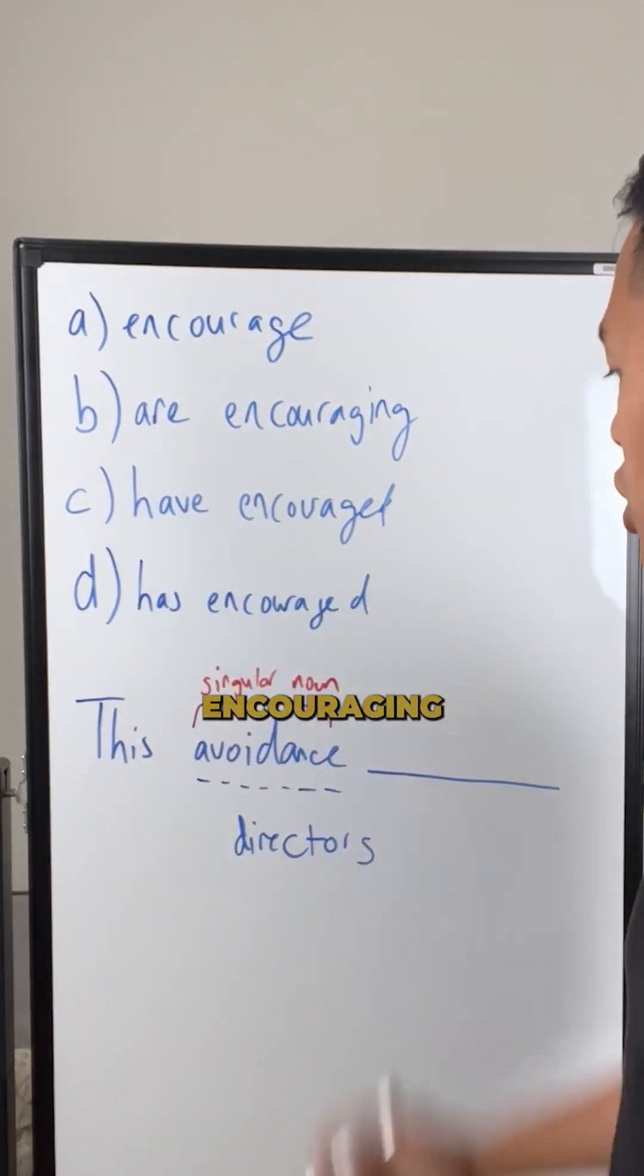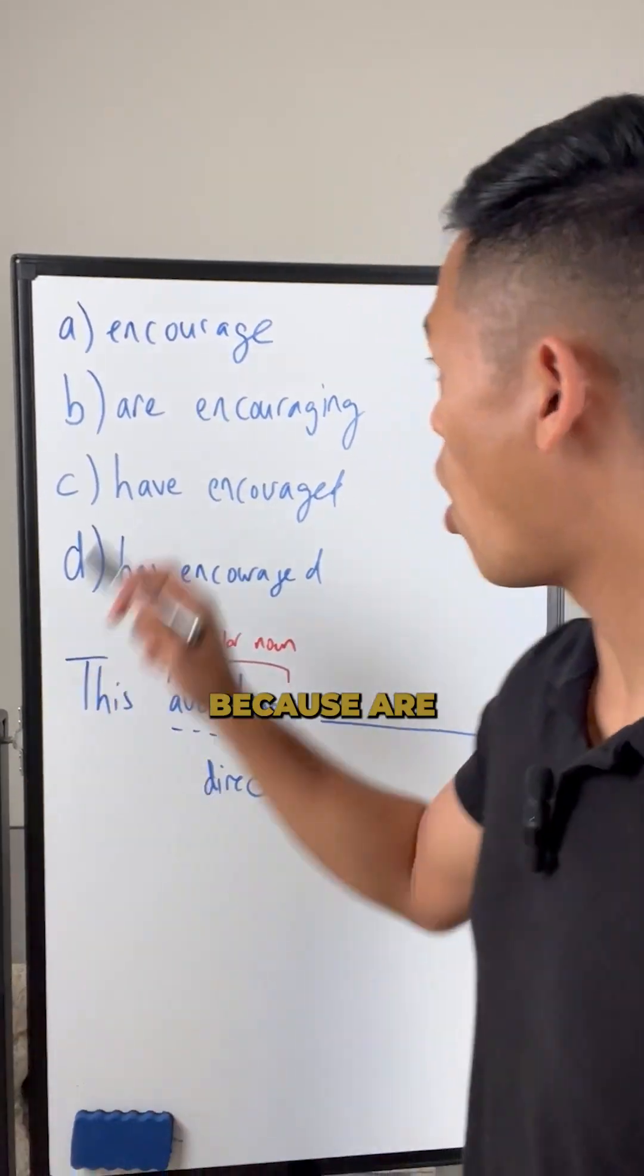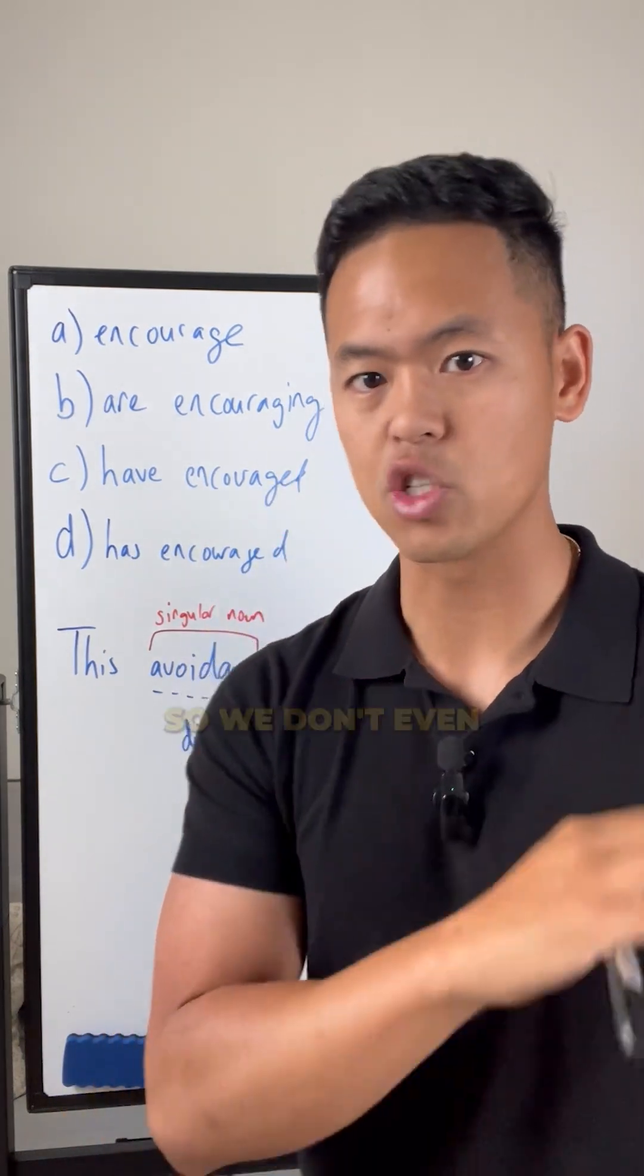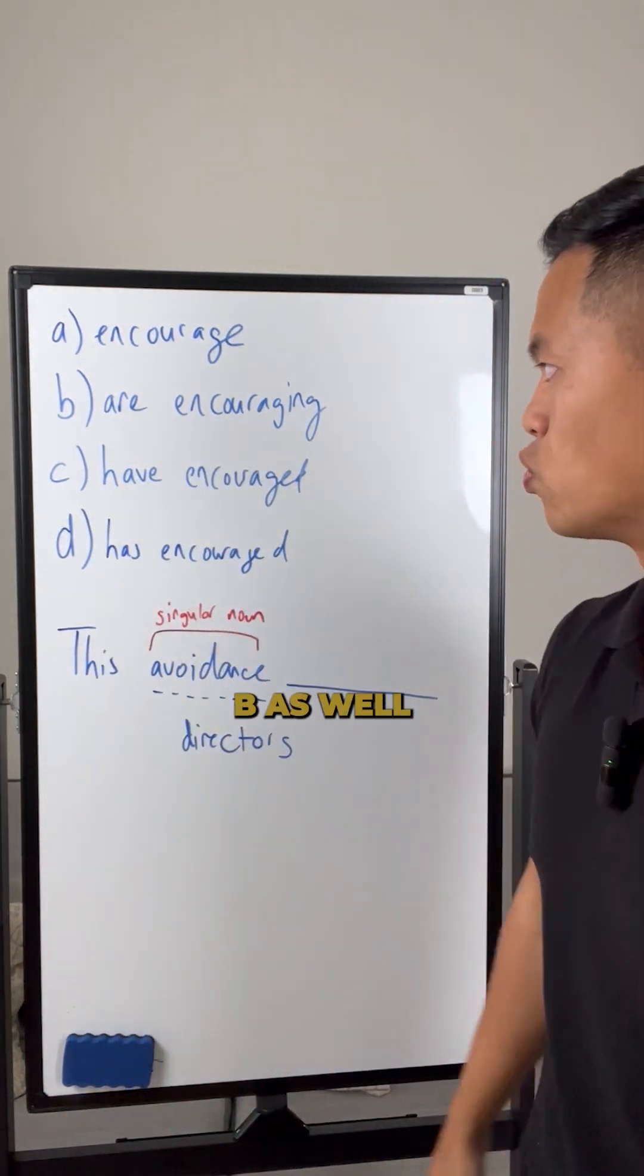The next one: this avoidance are encouraging. That doesn't make sense because 'are' is used for multiple things. This avoidance is one thing, so we don't even care about that. We can get rid of B as well.